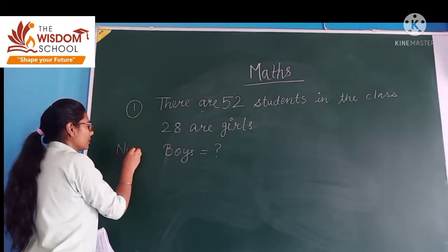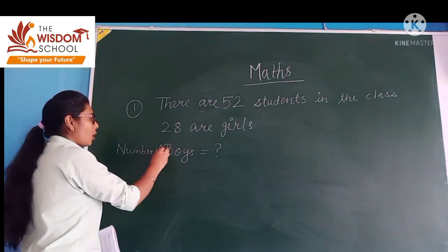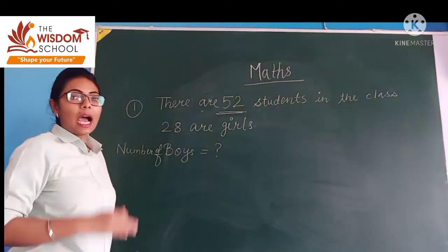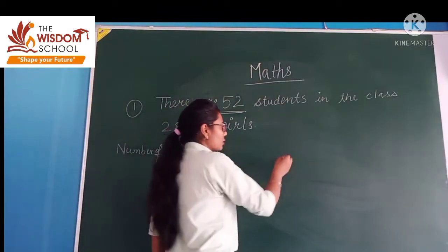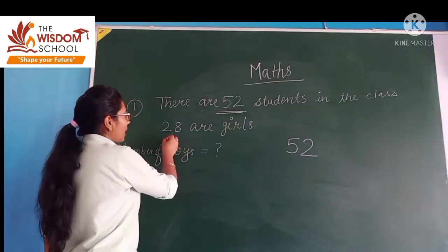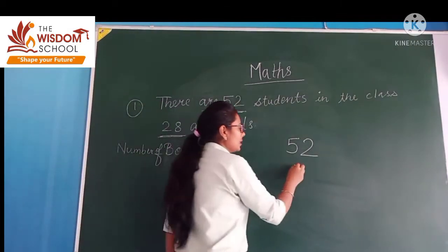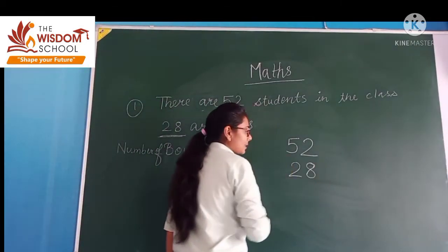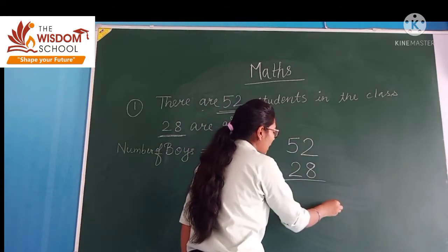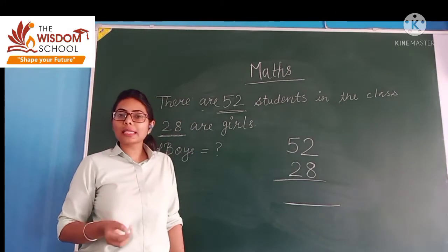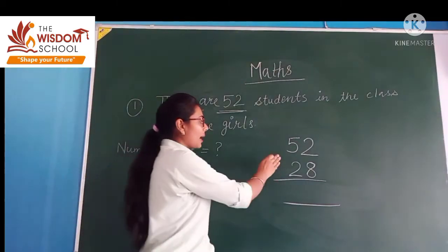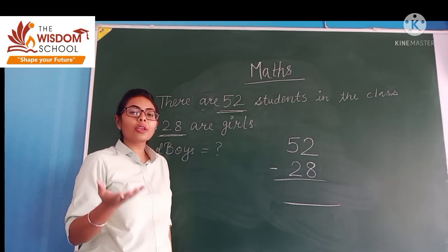So what we will do, students, is first check how many children are there in the class. Total there are 52 students. Among which, how many are girls? Girls are 28. And you have to find out the number of boys present in the class.